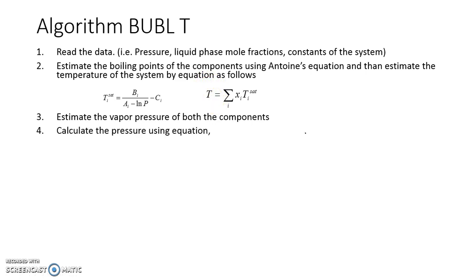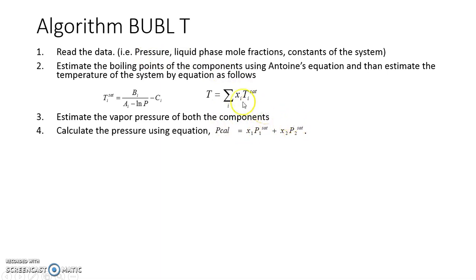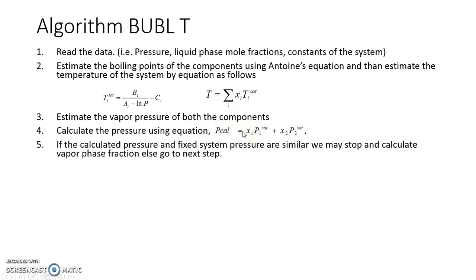We then use Raoult's law to calculate pressure as P_calc = x1·P1_sat + x2·P2_sat. Naturally, this calculated pressure may or may not equal the given system pressure, because P1_sat and P2_sat are based on the estimated temperature. We cross-verify: if P_calc equals system pressure, the assumed temperature is correct; if not, we proceed to improve it.